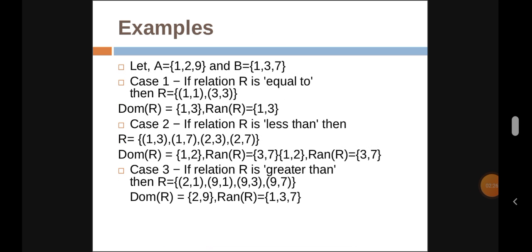Next are some examples. Let A={1,2,9} and B={1,3,7}. Case 1: If relation R is 'equal to', then R={(1,1),(3,3)}. Domain of R = {1,3} and Range of R = {1,3}.